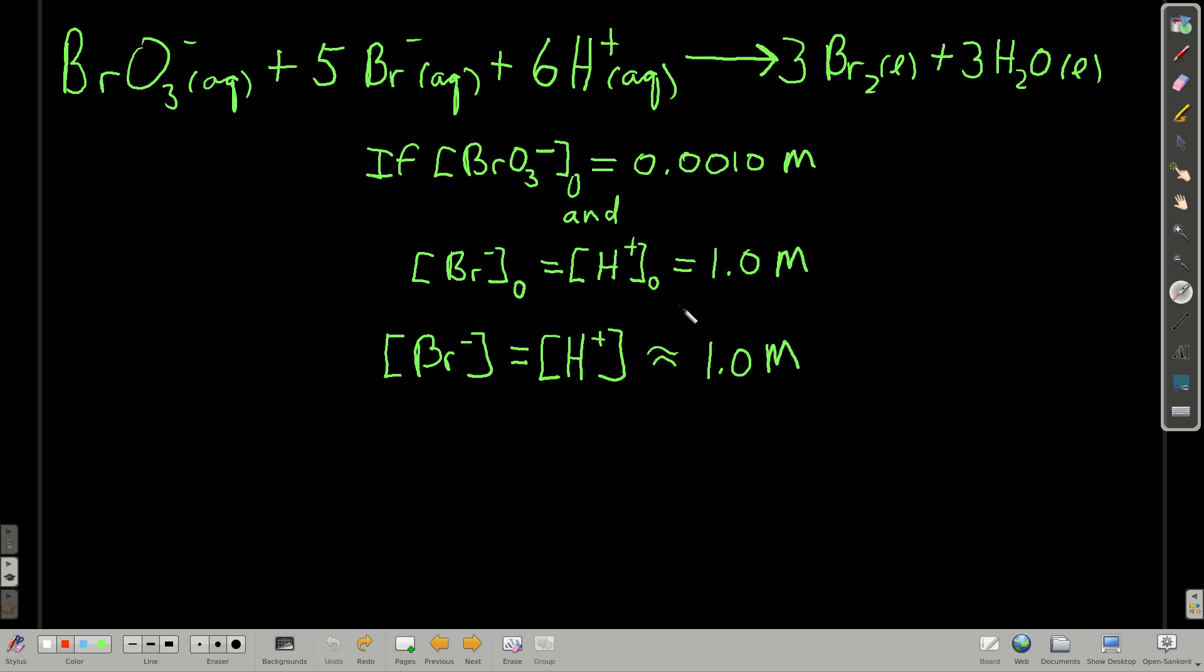So that means that as this reaction happens, compared to the concentration of bromate, the concentration of bromide and hydrogen ion are not going to change appreciably. So we can say that over the course of this reaction, the concentration of hydrogen ion and bromide pretty much stay the same. We say it doesn't change, it's constant.